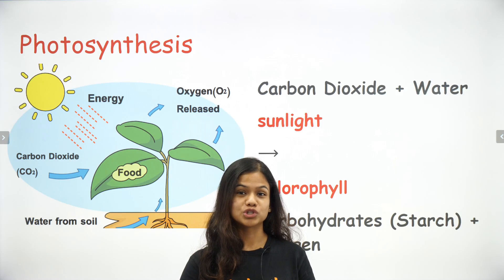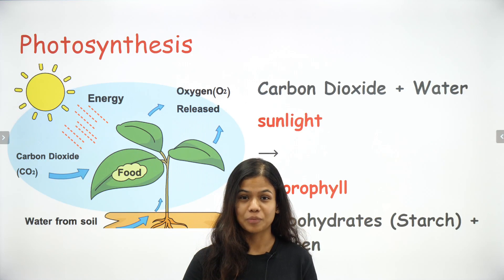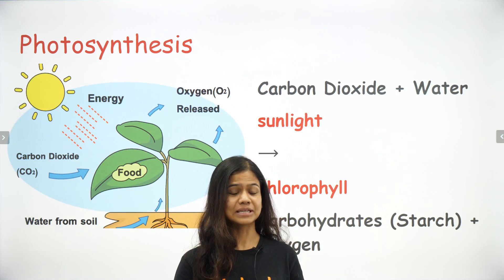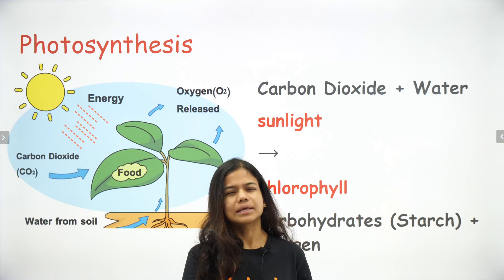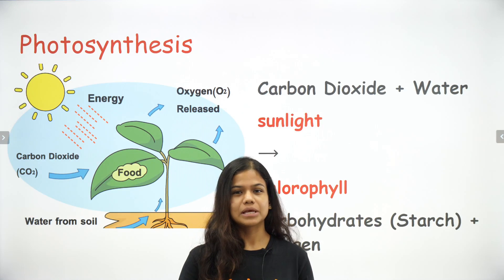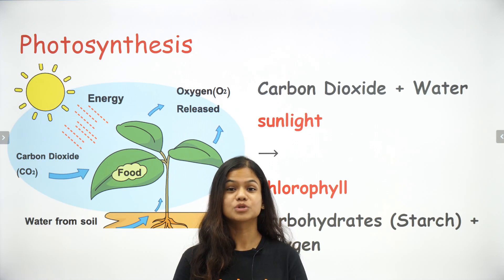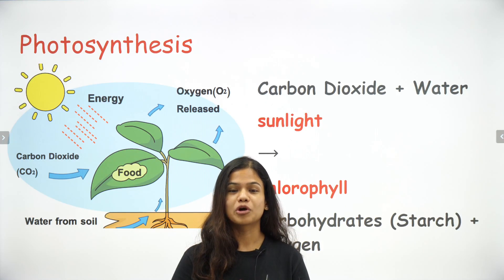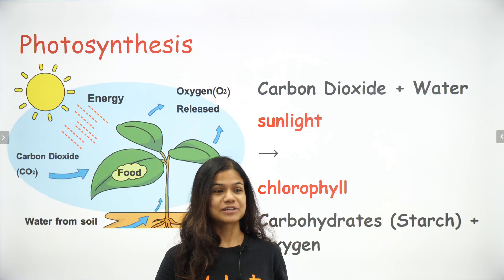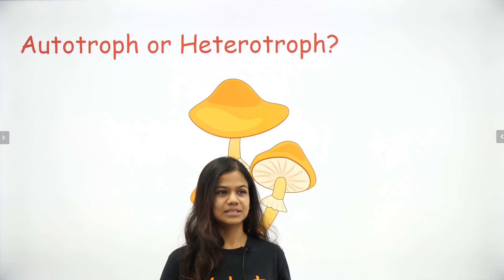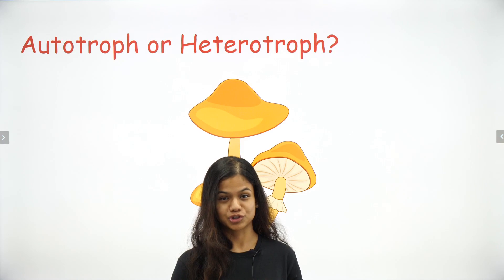Now we know the equation of photosynthesis and where all the ingredients come from in the kitchen of the plant. Chlorophyll is very important because it helps to trap the sunlight. If chlorophyll — the green pigment — is not present, sunlight would not be trapped and plants would not be able to make their own food. So let's move on and understand different types and modes of nutrition.